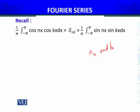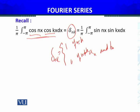Before calculating the expressions for a_n and b_n, I want to recall some trigonometric results. The integral from minus π to π of cos(nx)cos(kx) will be π times delta_nk. Delta_nk, the Kronecker delta, will be one if n equals k and zero if n is not equal to k.